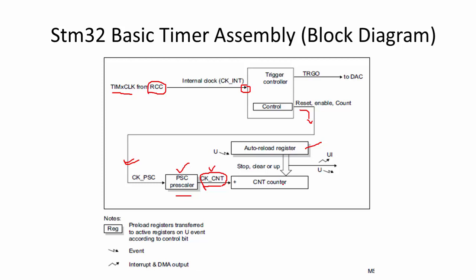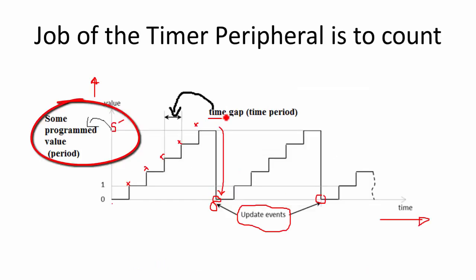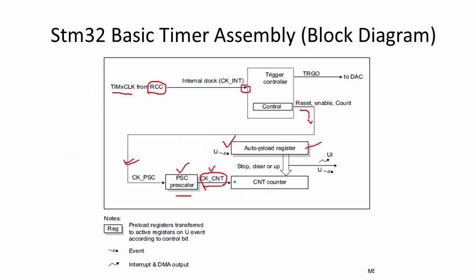Whenever this counter reaches the value which is stored in the auto-reload register, the counter resets back to 0 and starts counting again. That pre-programmed threshold value you have to store in the auto-reload register. When the counter value reaches this value, the counter rolls back to 0 and generates an event called the update event. That update event has the potential to interrupt the processor.